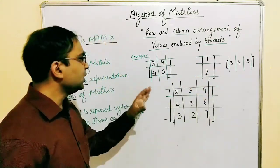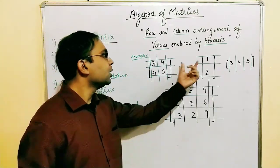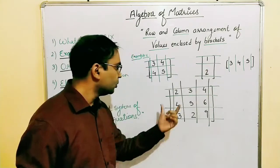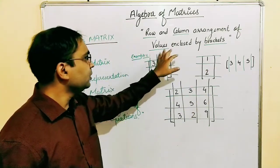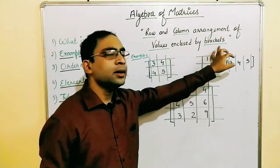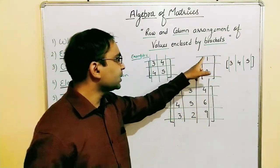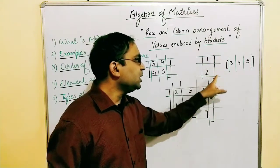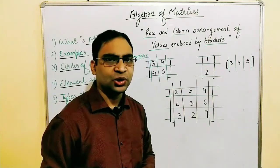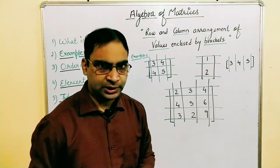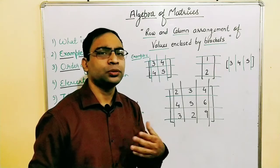All of these values are arranged in row and column form, and then they are enclosed by brackets. This is important — every matrix is enclosed within these brackets. So we call such a representation a matrix.